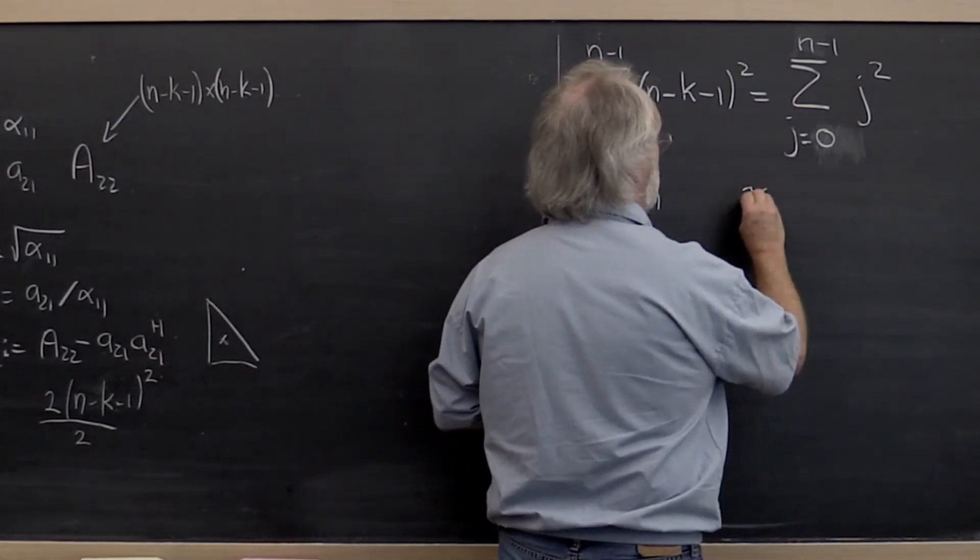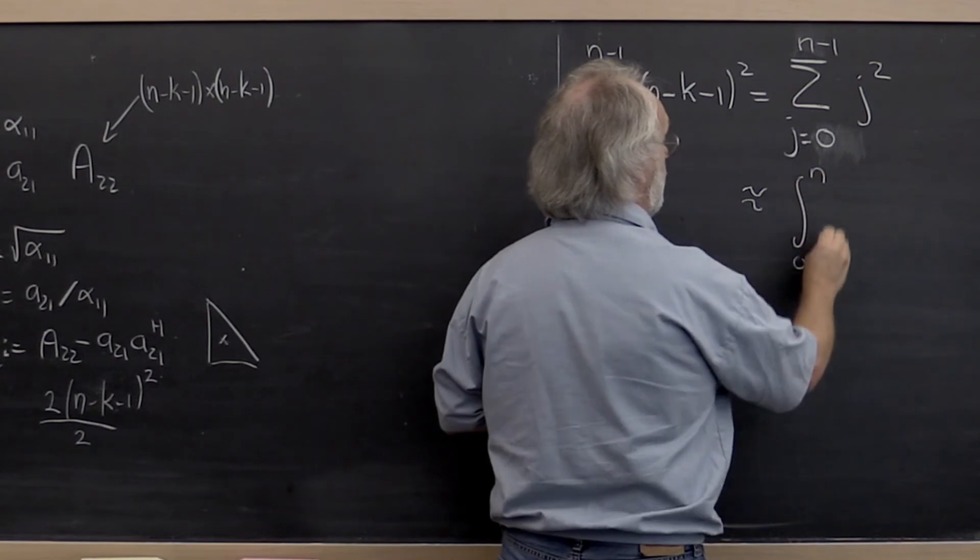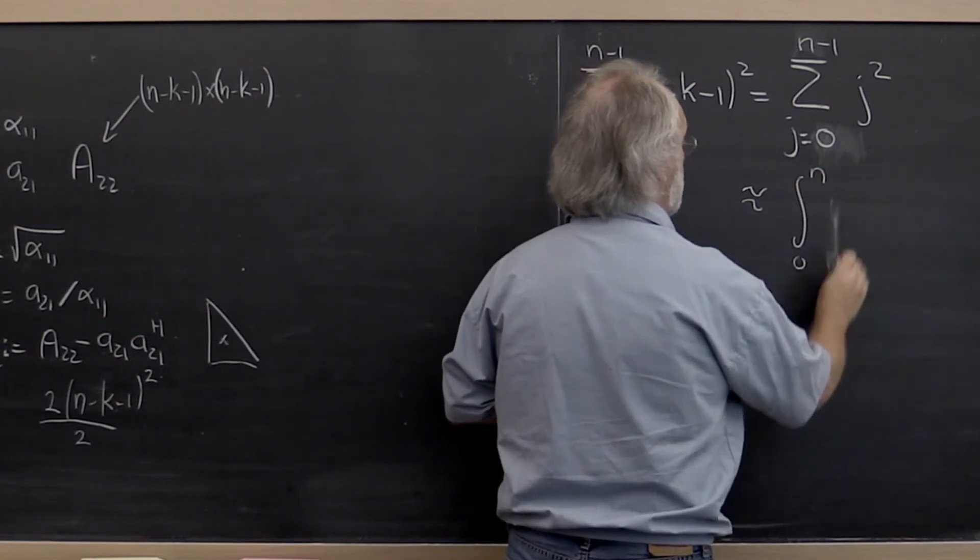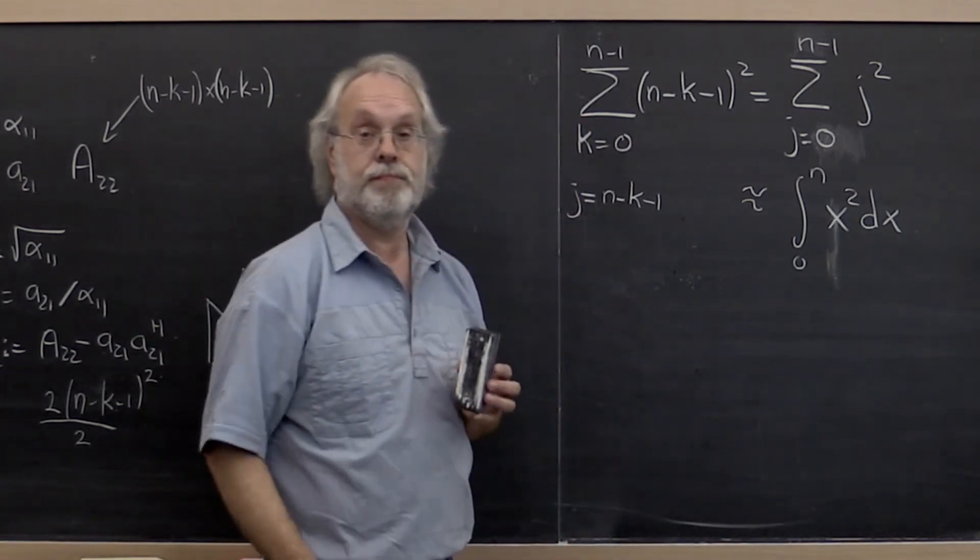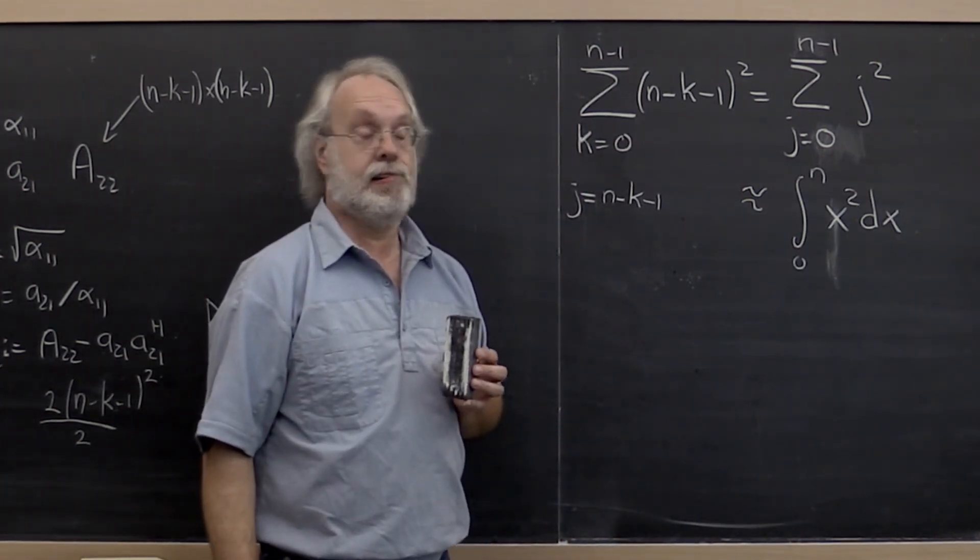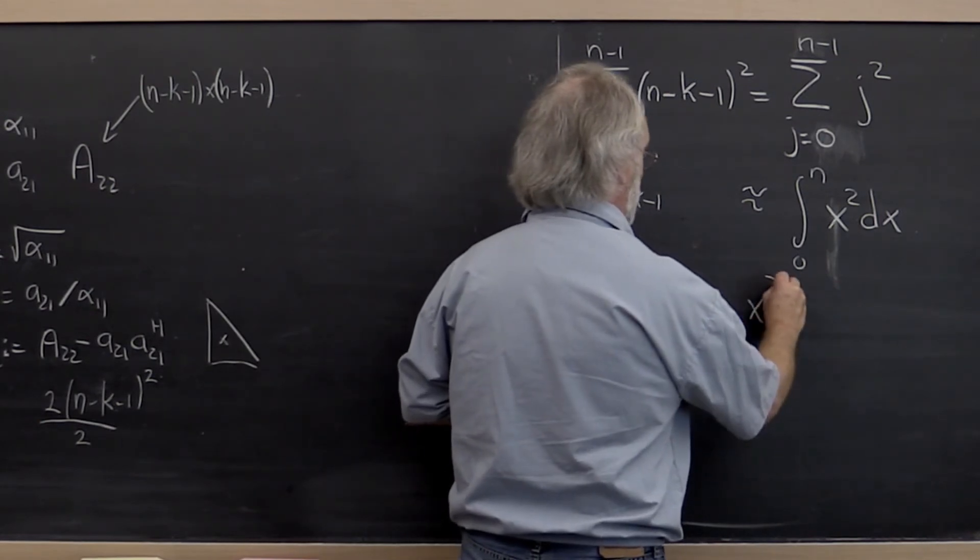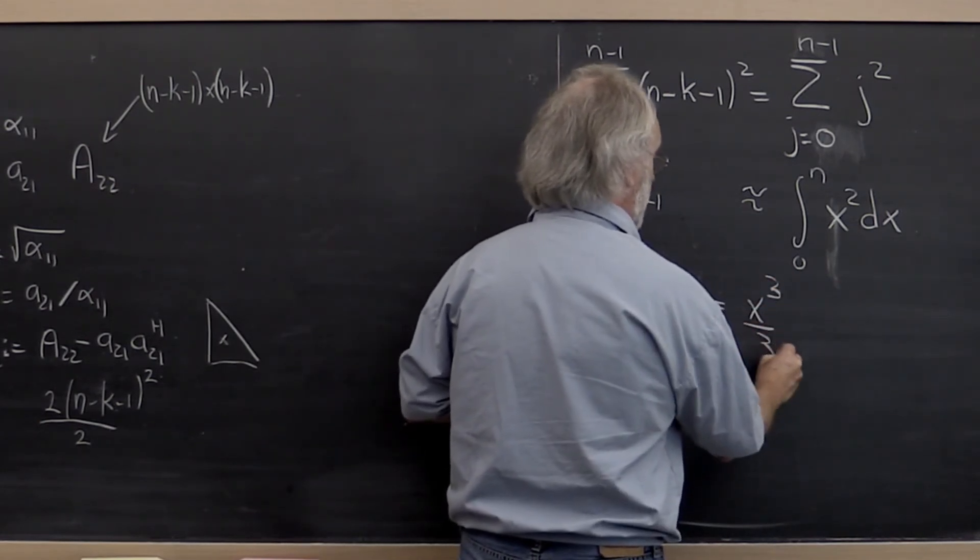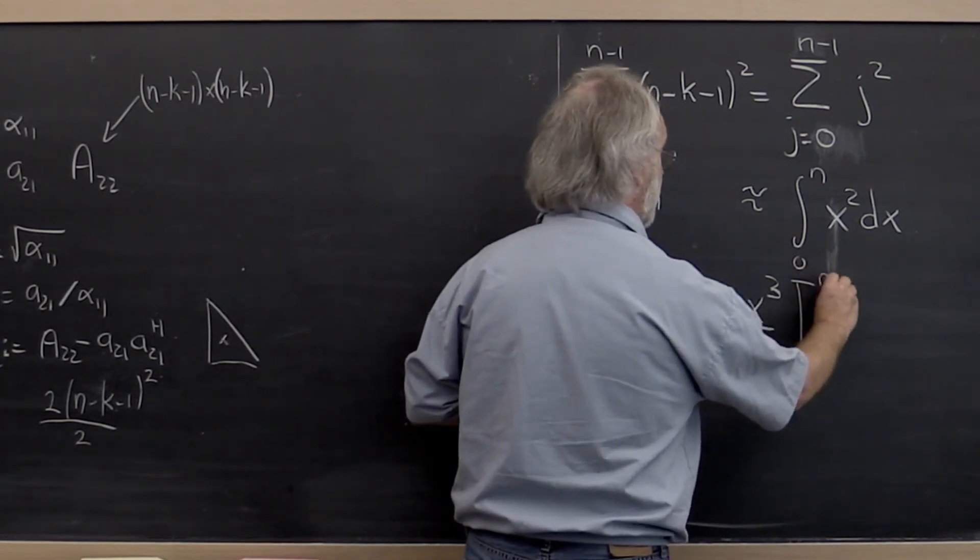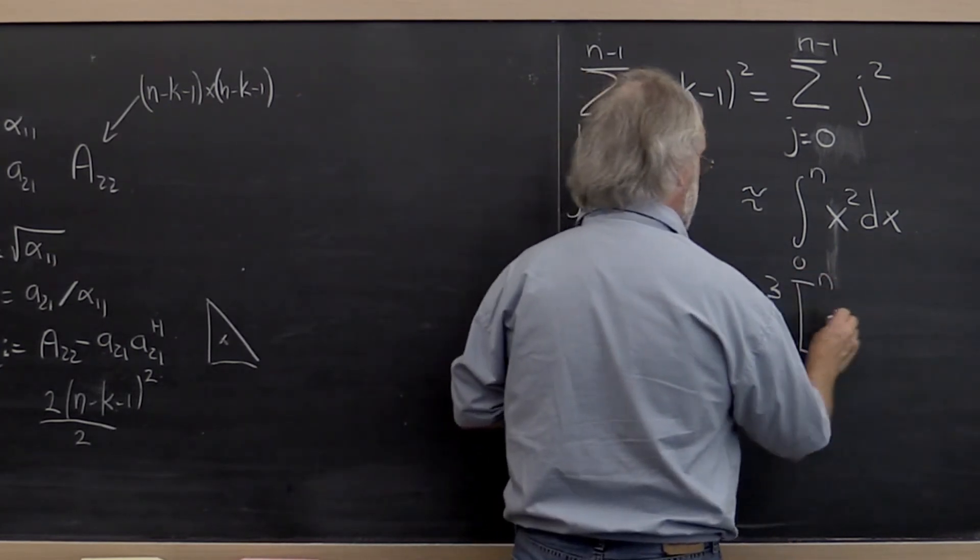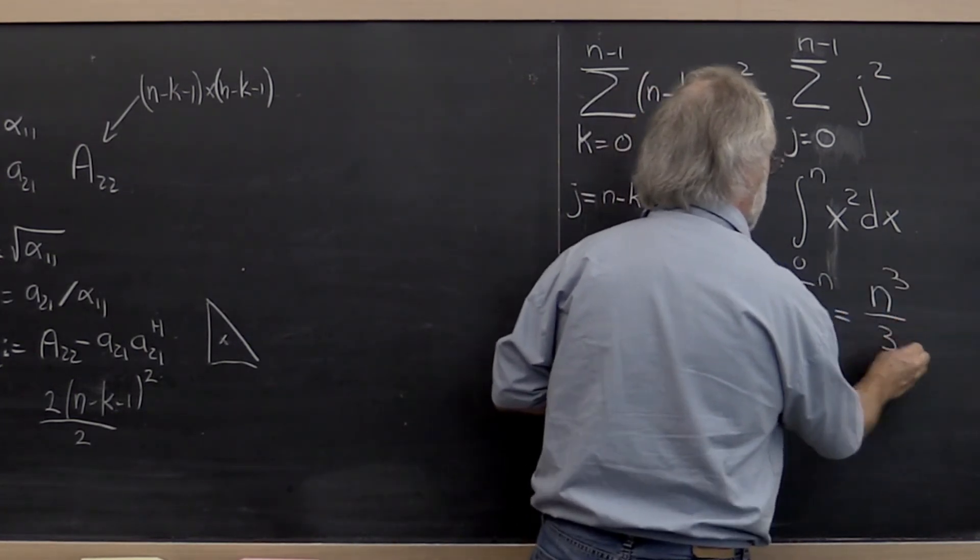And the trick is that this is approximately equal to the integral from 0 to n of x squared dx. And that we know is x cubed over 3 evaluated between 0 and n. And that tells us that the cost is approximately n cubed over 3.